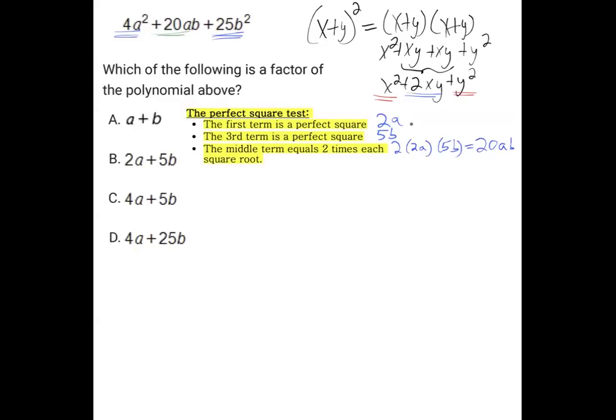And that's exactly what we have there. So this passed the perfect square test with this, this, and this. And therefore, it's going to factor to each of those things that we had when we took the square roots. It's going to factor to 2a plus 5b all squared.